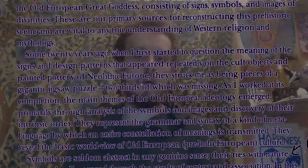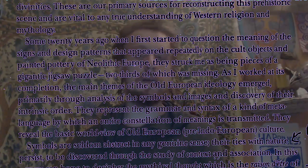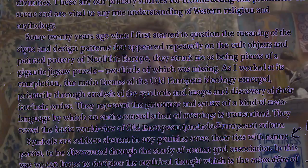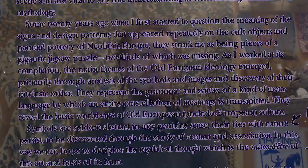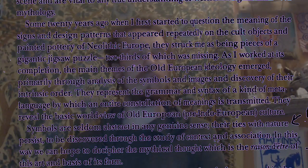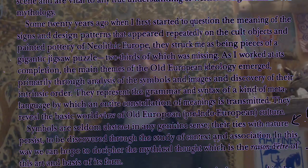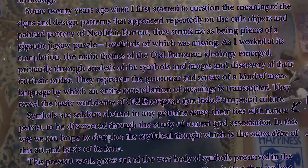Some twenty years ago, when I first started to question the meaning of the signs and design patterns that appeared repeatedly on the culled objects and painted pottery of Neolithic Europe, they struck me as being pieces of a gigantic jigsaw puzzle, two-thirds of which was missing. As I worked at its completion, the main themes of the old European ideology emerged, primarily through the analysis of symbols and images and discovery of their intrinsic order. They represent the grammar and syntax of a kind of meta-language by which an entire constellation of meanings is transmitted. They reveal a basic worldview of old Europe, pre-Indo-European culture.